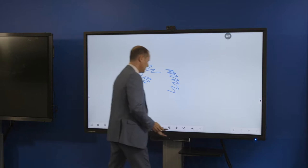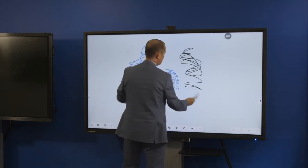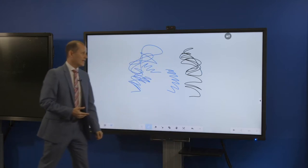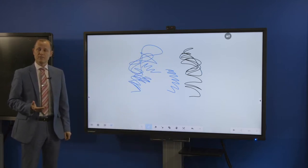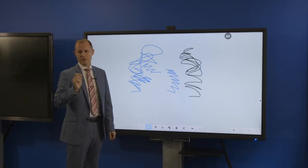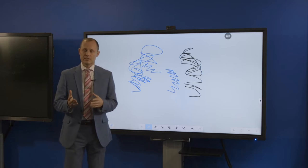It also allows us to use two pens simultaneously and at speed. This new technology means that we have one of the best writing experiences in the market, so you can write your signature, you can dot the i's, cross the t's. Really, what people are looking for is the same experience you would get from your mobile phone or your tablet when you're writing with a stylus.